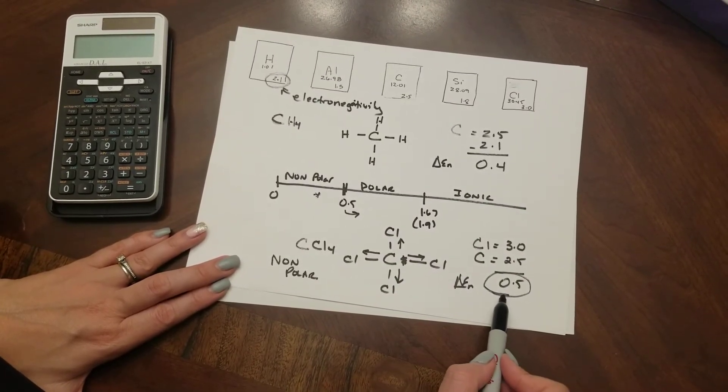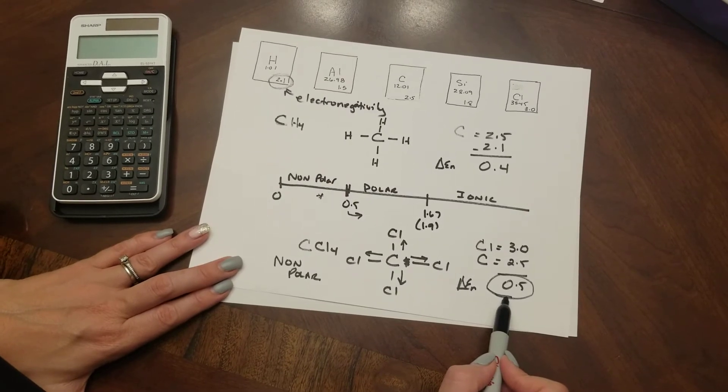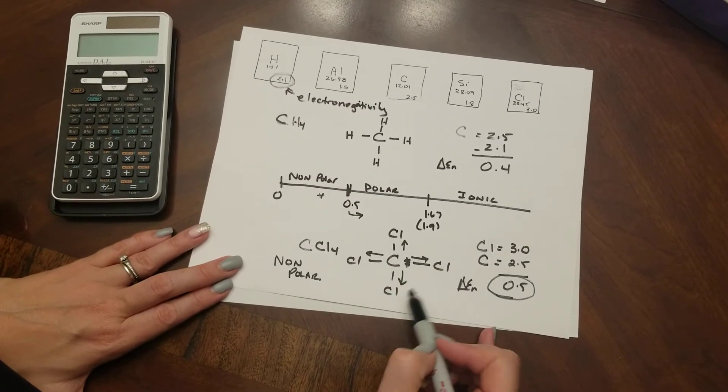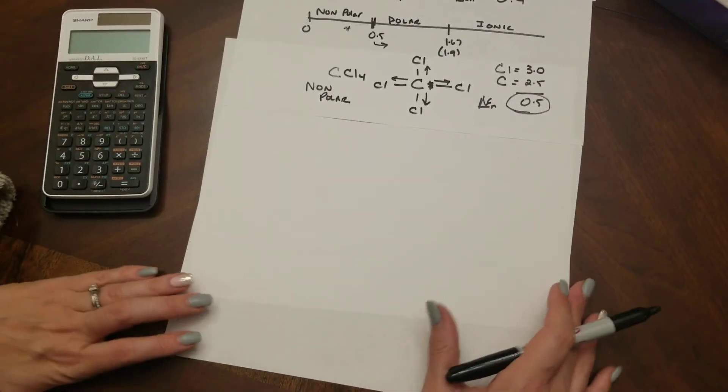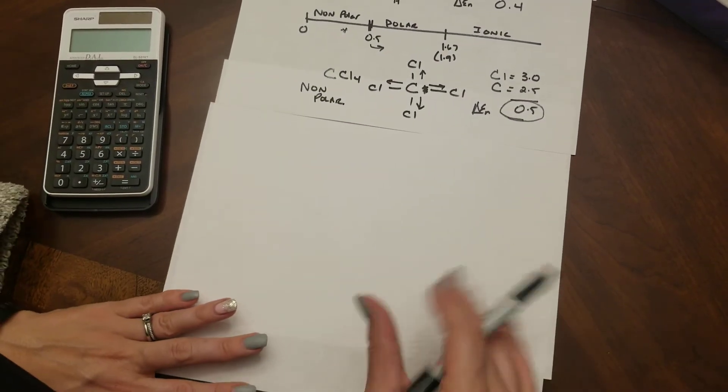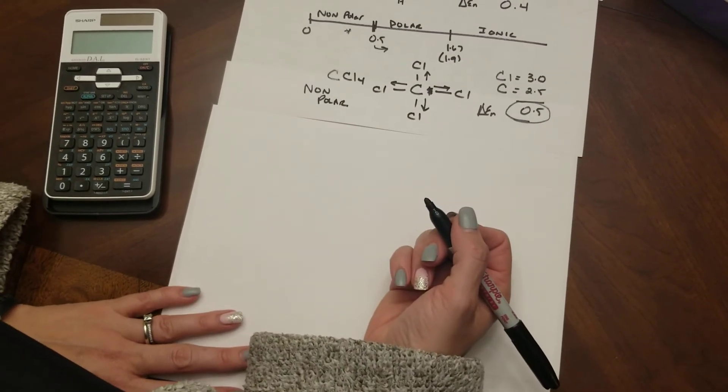The pull in all four directions is effectively cancelling each other so because of the shape of the molecule sometimes we can do math to figure out polarity and go wow this should be polar but the shape of the molecule makes it to be non-polar. One other way we can tell from the shape of the molecule if it's polar or non-polar is to look for electron pairs.